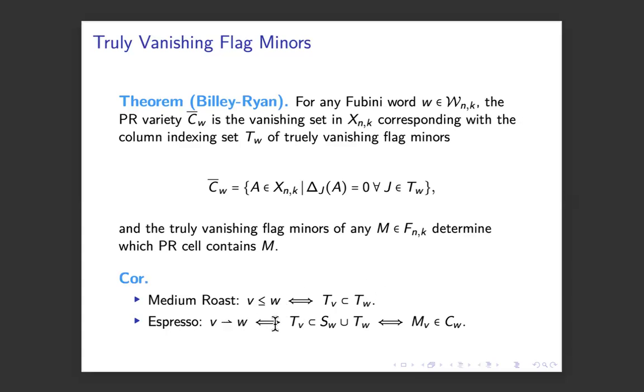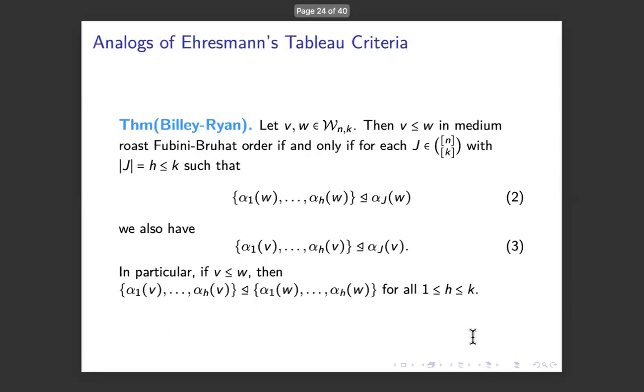And this happens, the espresso roast, you get a covering relation if and only if the matrix for V is contained in, it should be that MW is contained in CV closure, like that.